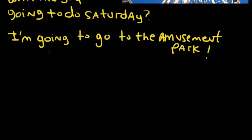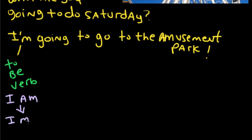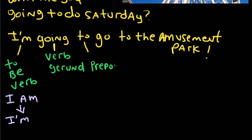So in this example, we use the to-be verb — in the form of 'I am' or 'I'm' — and then we use the verb in the gerund form 'going,' and then we use 'to' as a preposition: 'I'm going to.' That's how you make the phrase about a plan or arrangement in the future. So it's the to-be verb, the verb in the gerund, and then 'to.'